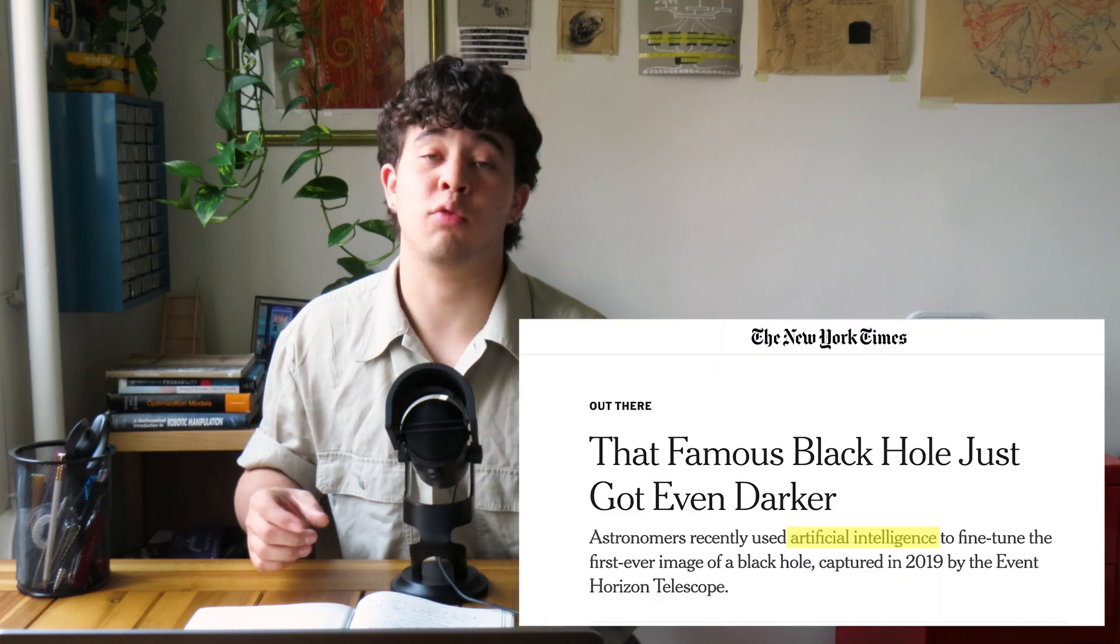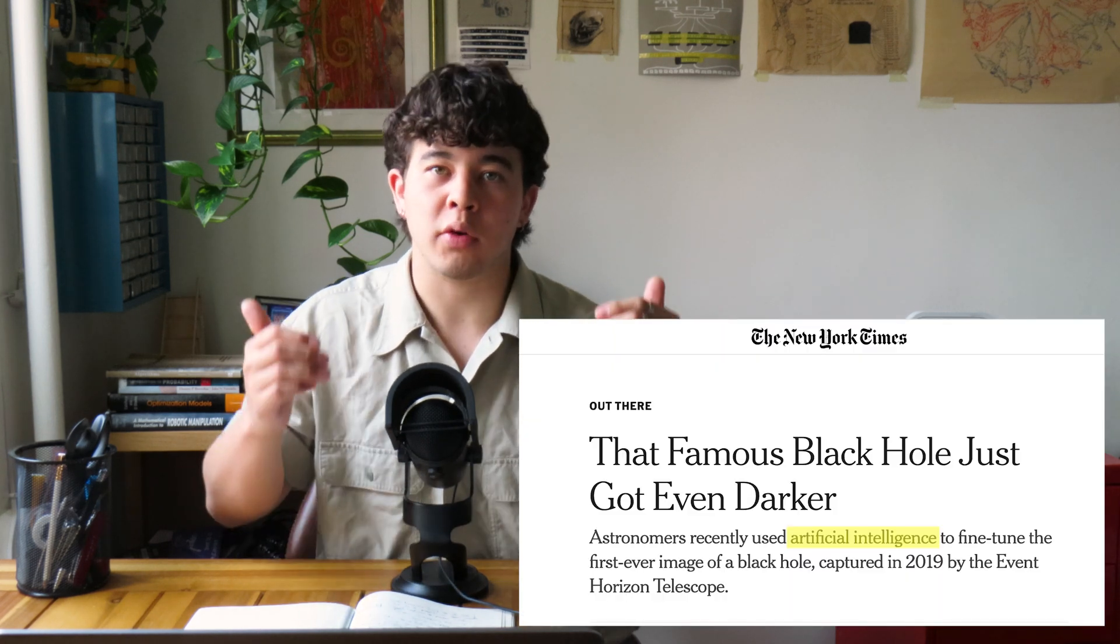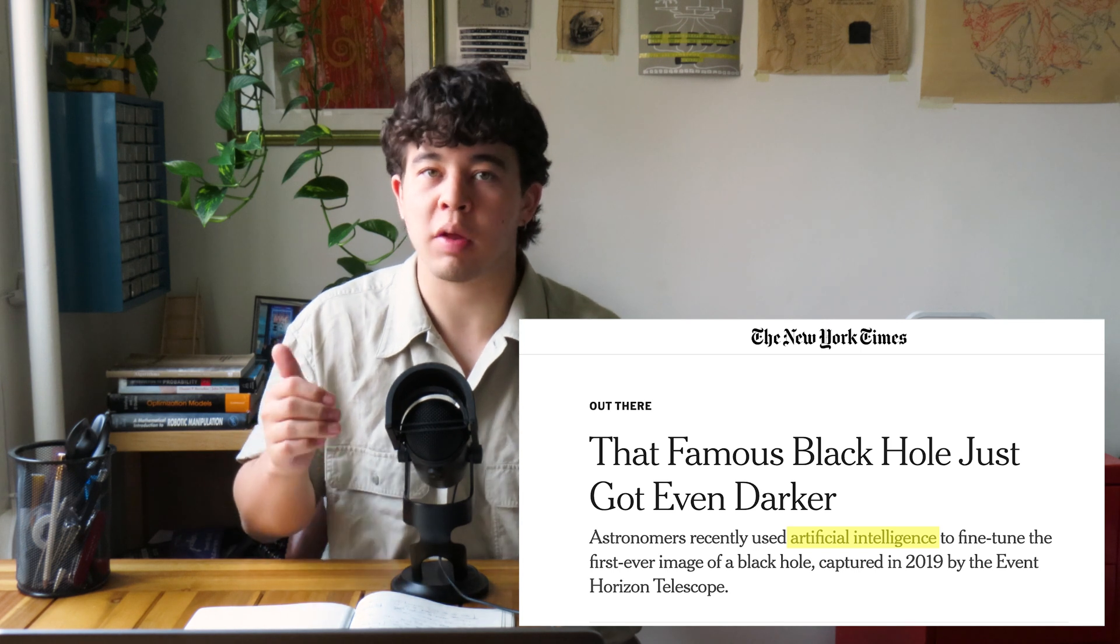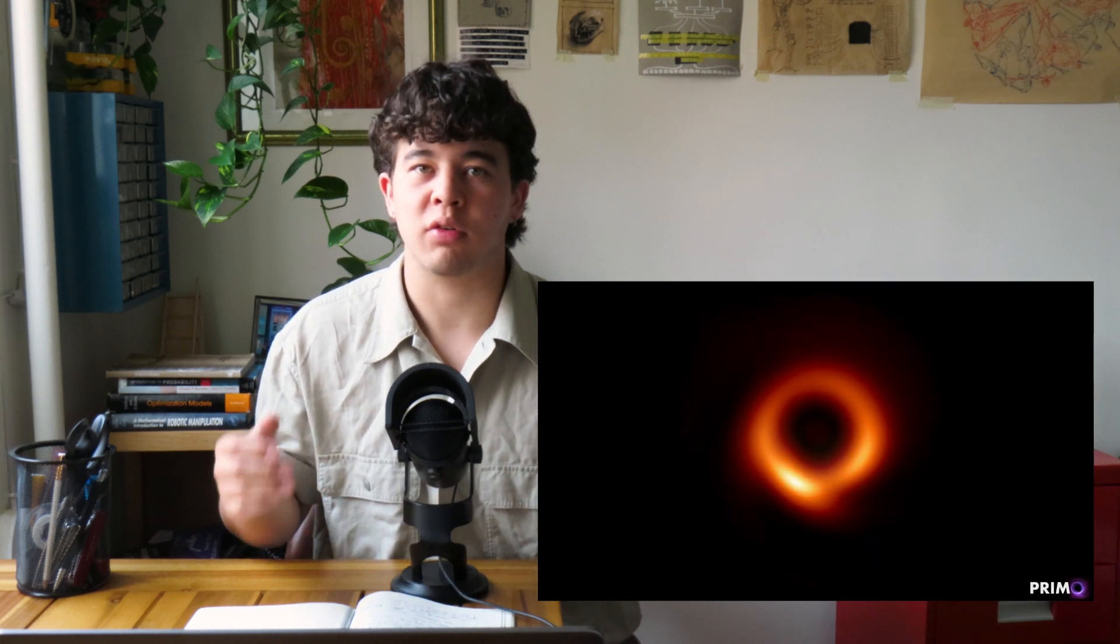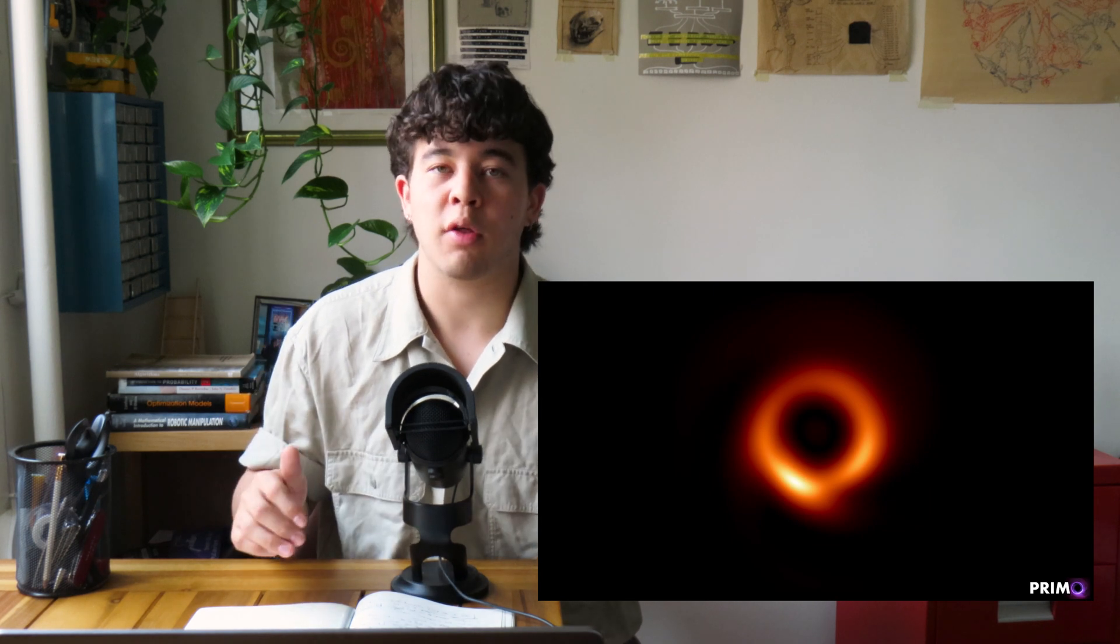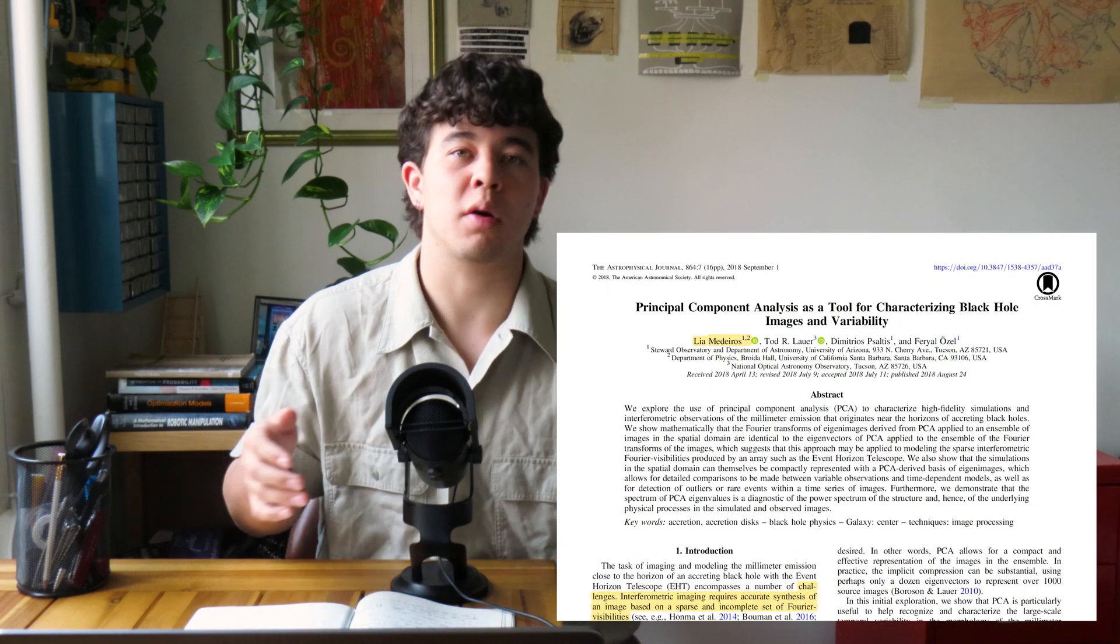Last month, I saw this headline on the front page of the New York Times about using AI to improve the first image ever produced of a black hole. Being an AI researcher myself, that piqued my interest. So I emailed the lead author on that paper and all the papers leading up to it to talk about it. In this video, I'm going to share what I learned and what the New York Times and other outlets got wrong.